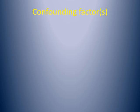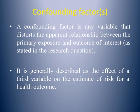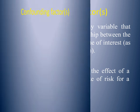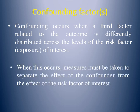What do we mean by confounding factors? A confounding factor is any variable that distorts the apparent relationship between the primary exposure and the outcome of interest, as stated in the research question. It is generally described as the effect of a third variable on estimated risk for a health outcome. Confounding occurs when a third factor related to the outcome is differently distributed across the levels of the risk factor or exposure that is of interest. When this occurs, measures must be taken to separate the effect of the confounder from the effect of the risk factor of interest.